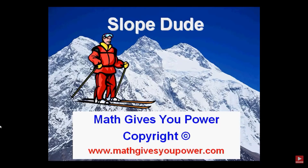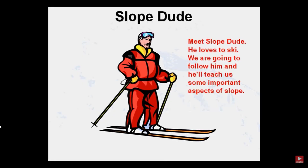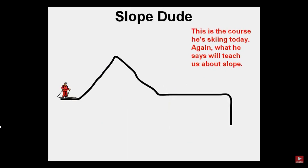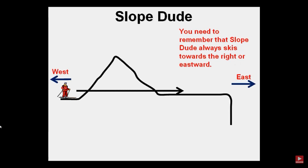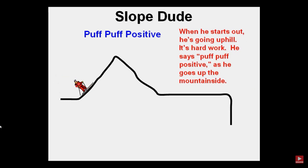Welcome to the Adventure of Slope Dude. Meet Slope Dude — he loves to ski. We are going to follow him and he'll teach us some important aspects of slope. This is the course he's skiing today. You need to remember that Slope Dude always skis toward the right or eastward. When he starts out, he's going uphill — it's hard work. He says 'puff, puff, positive' as he goes up the mountainside.